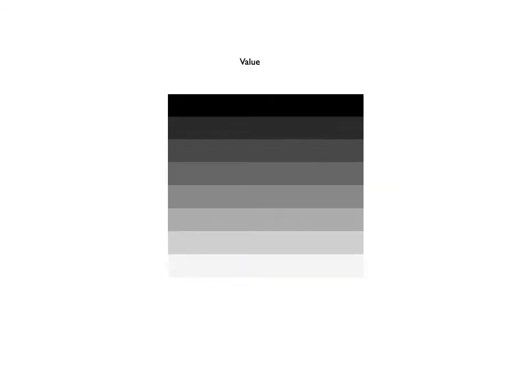There's also another way that you can change color, and that's through something called value. This brings us back to the idea of light. When you have a lot of white light, things tend to be lighter in value. As you get less and less light, they tend to be darker in value. And that's true for colors too — if you're in a dark room, that red is not going to look the same as in a bright light.